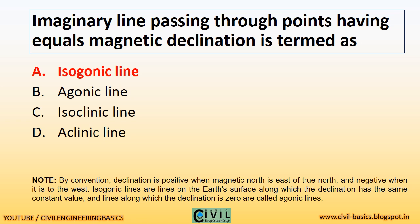By convention, declination is positive when magnetic north is east of true north, and negative when it is to the west. Isogonic lines are lines on the Earth's surface along which the declination has the same constant value, and lines along which the declination is zero are called agonic lines.